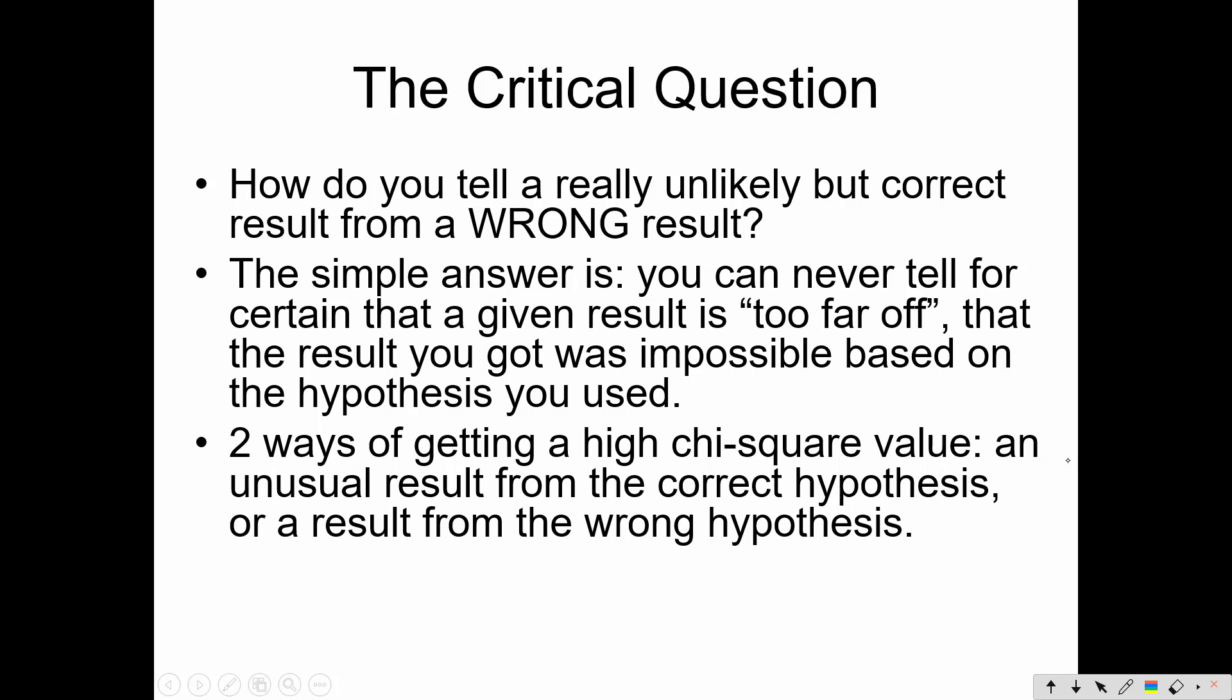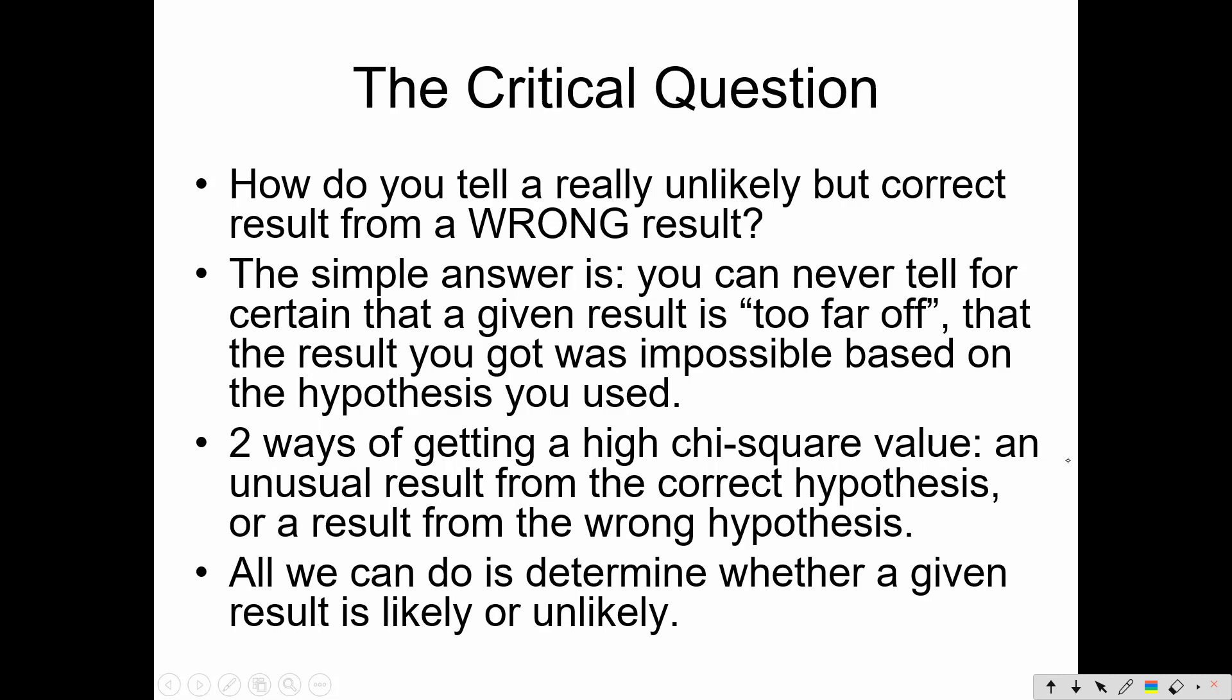There's two ways of getting a high chi-square number. You can get an unusual result from your correct hypothesis, or you could have a result from a wrong hypothesis. And you never really can tell for sure. All you can do is determine whether a given result is likely or unlikely.